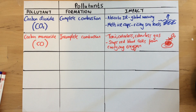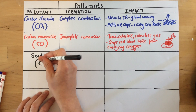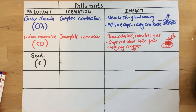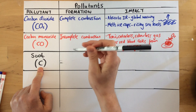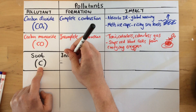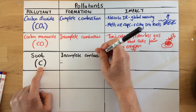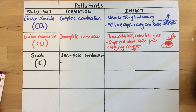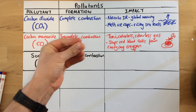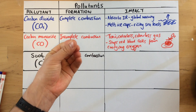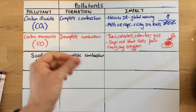Next up we have soot. You might also hear this called particulates of carbon or particles of carbon — essentially it's just carbon atoms. Again, this is formed from incomplete combustion of a hydrocarbon when there's an insufficient supply of oxygen. Soot is that nasty black stuff you get when you burn a hydrocarbon — that horrible black dust.